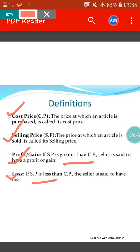So you have come to know about four different things in this video: number 1 — cost price, number 2 — selling price, number 3 — profit, number 4 — loss. We will do sums based on cost price and selling price in the next video. Thank you.